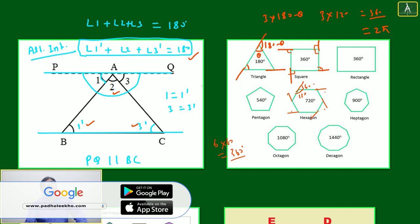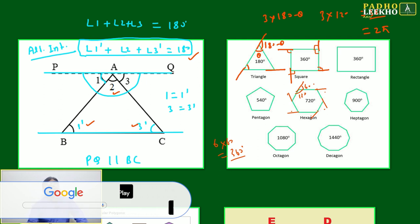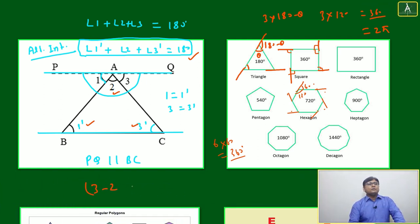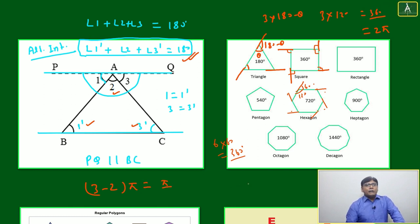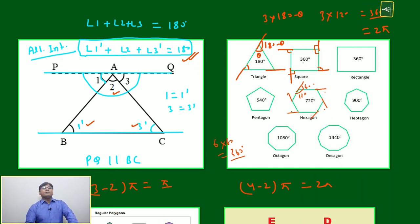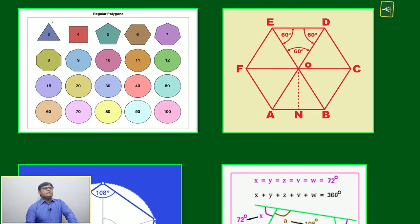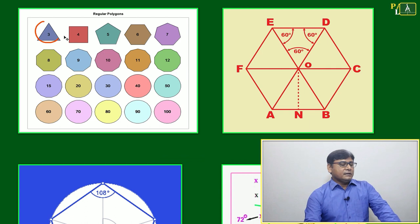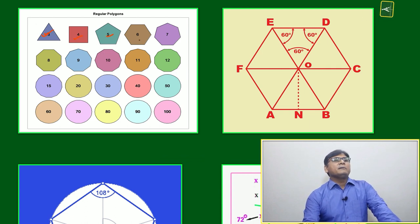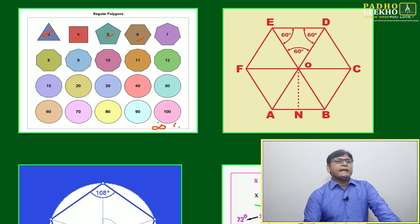Sum of interior angles equals (n − 2)π. For a triangle, n = 3: (3 − 2)π = π = 180°. For a quadrilateral, n = 4: (4 − 2)π = 2π = 360°, and for a square four times 90° is indeed 360°. For regular polygons starting from triangle with 3 sides, quadrilateral, pentagon, hexagon — if the number of sides is infinite, it becomes a circle.